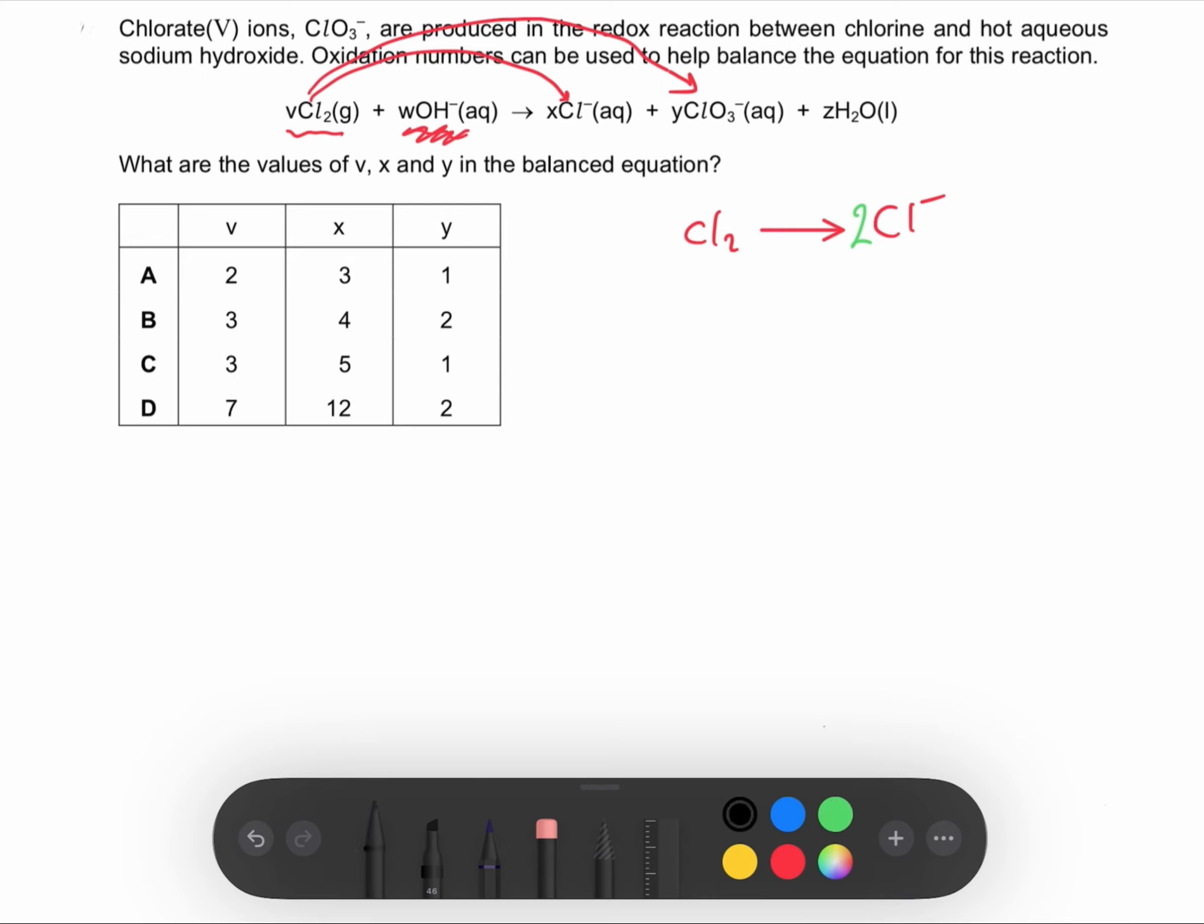After balancing the atoms, we have to start balancing the charges. The overall charge here is -2 and here it's zero. That's why we add electrons to the more positive term, which is the left-hand side, which is 2 electrons.